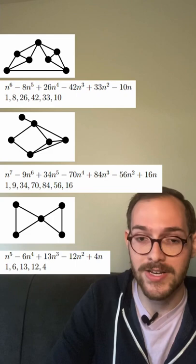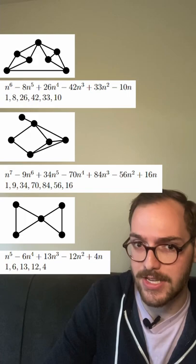If you look at a bunch of these polynomials, you might notice a pattern. The absolute value of the coefficients increase up to a maximum, and then decrease.